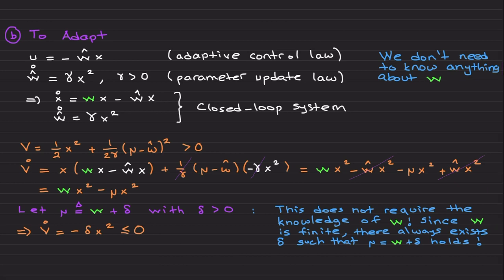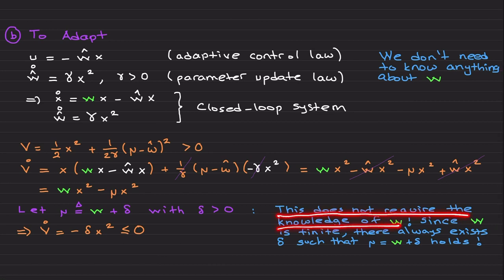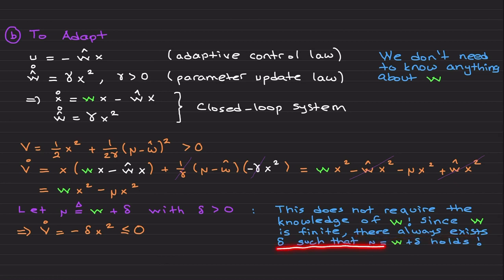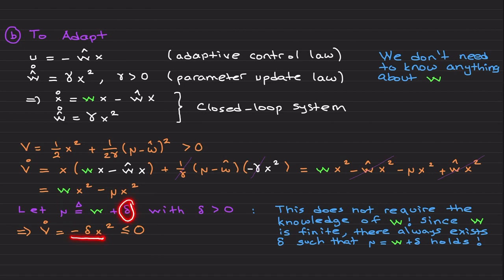Without loss of generality, I let μ = w + δ. This is not part of the control algorithm — it is part of the analysis only. It is not an assumption; it is an existence condition. Since w is finite (less than infinity), there always exists a δ such that this selection holds. I am not assuming knowledge of w or its upper bound. With this substitution, the w term cancels and you end up with -δx².